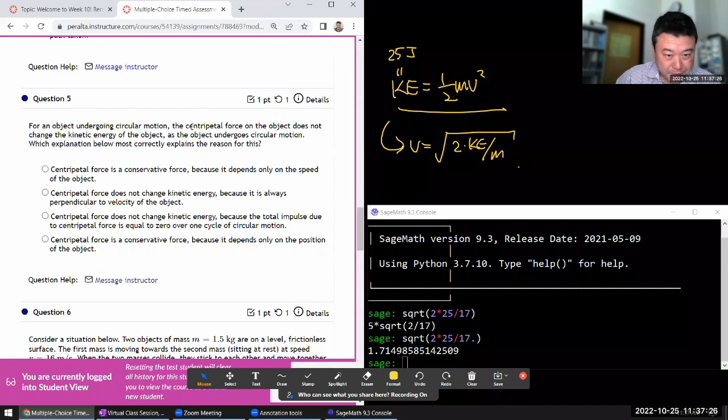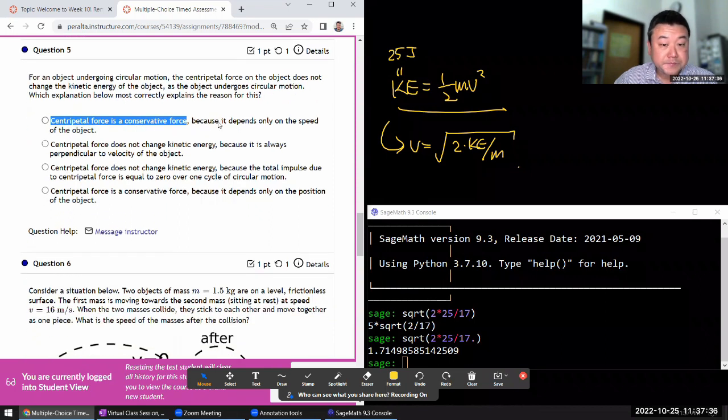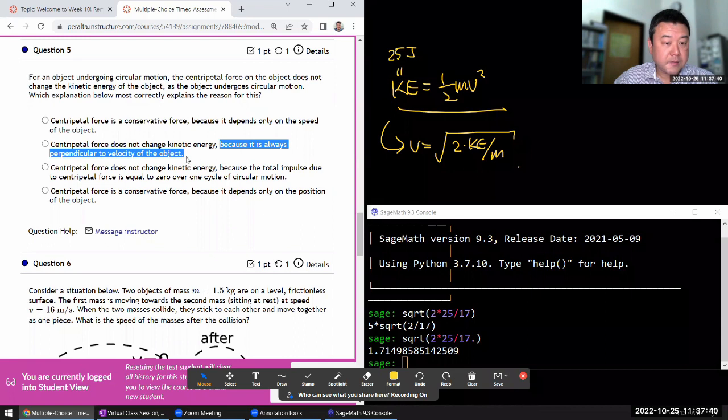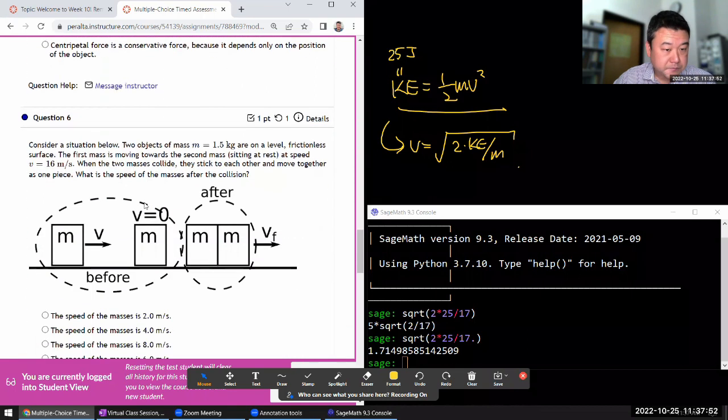For an object undergoing circular motion, centripetal force does not change kinetic energy. Why? It depends on what's providing the centripetal force. Yeah, this is why. If it's perpendicular to velocity, it's perpendicular to instantaneous displacement. So it doesn't work. The rest is nonsense.